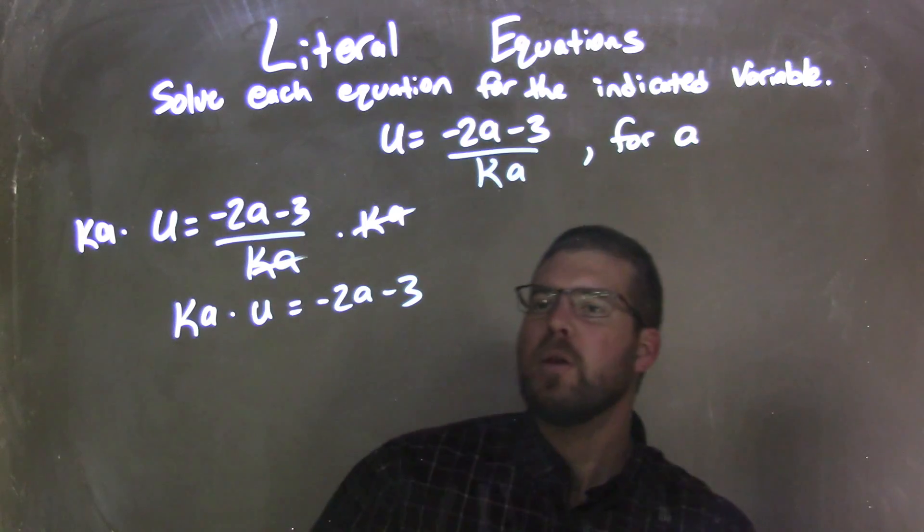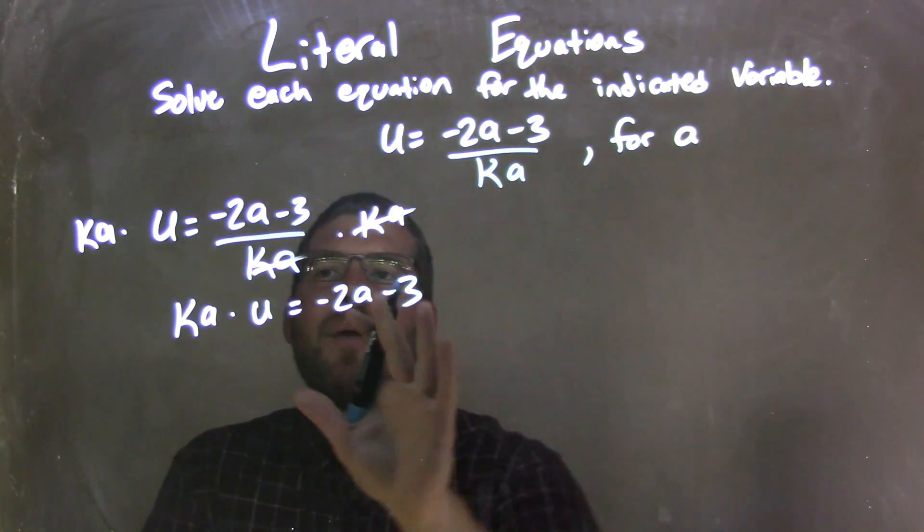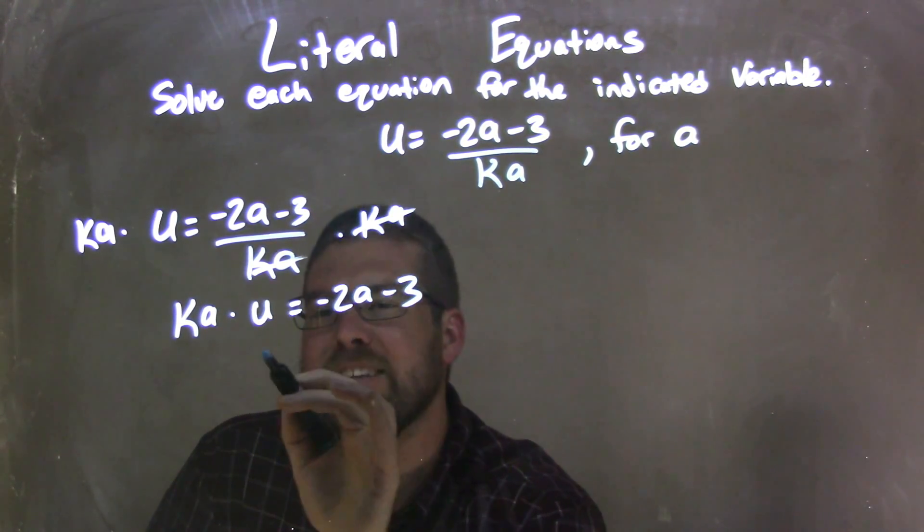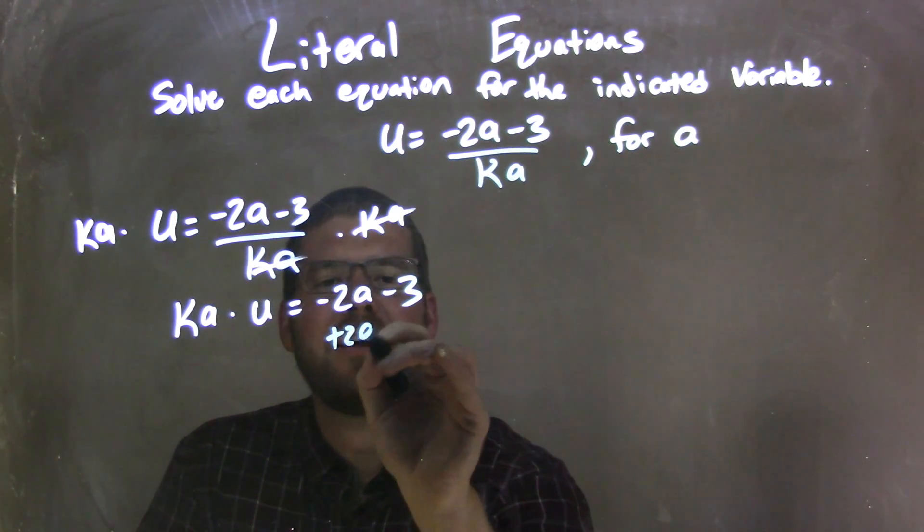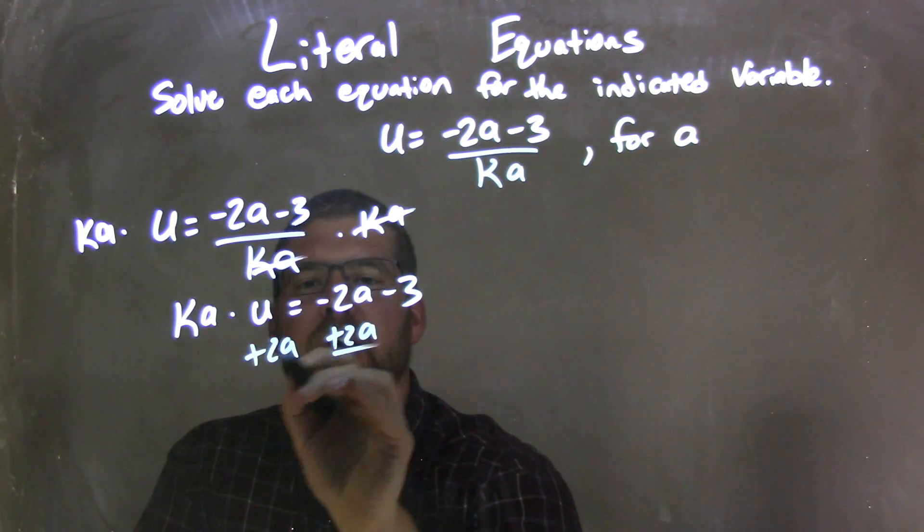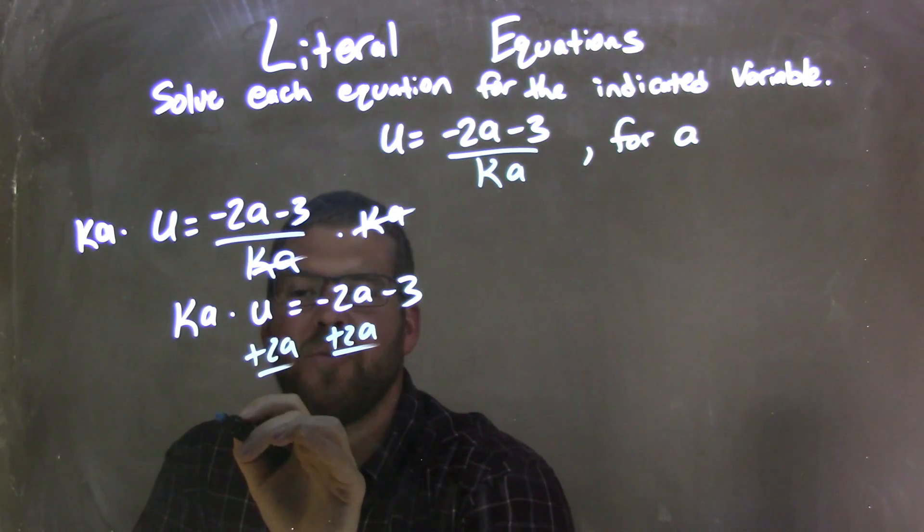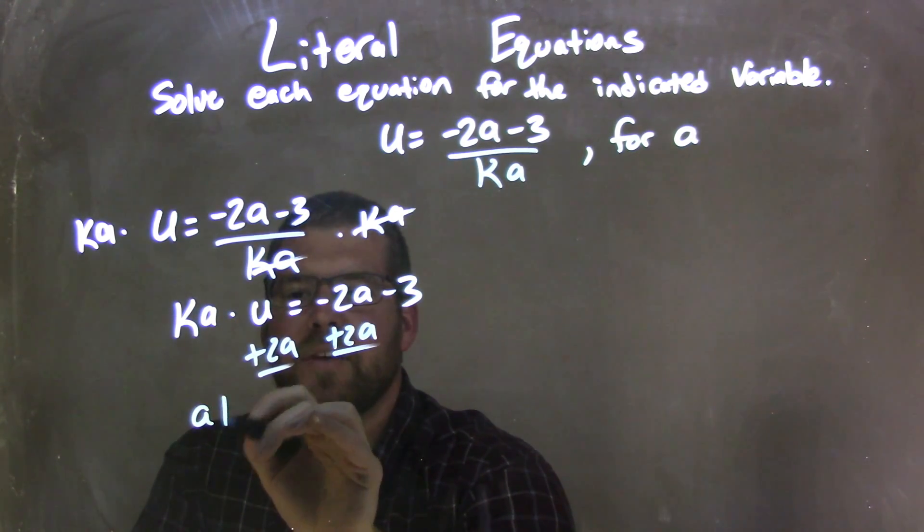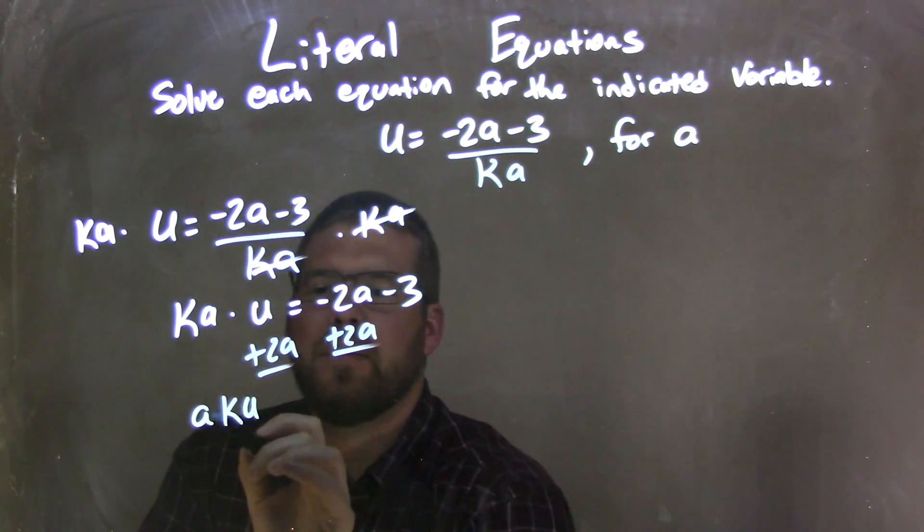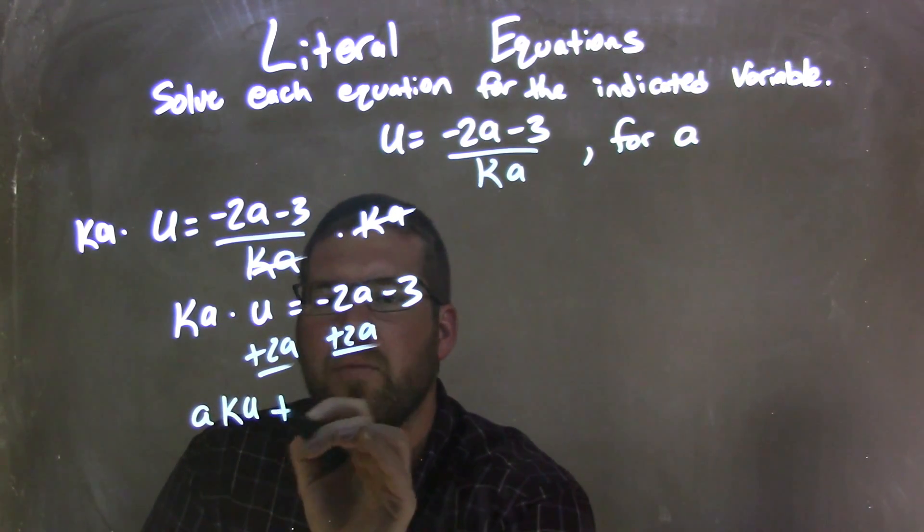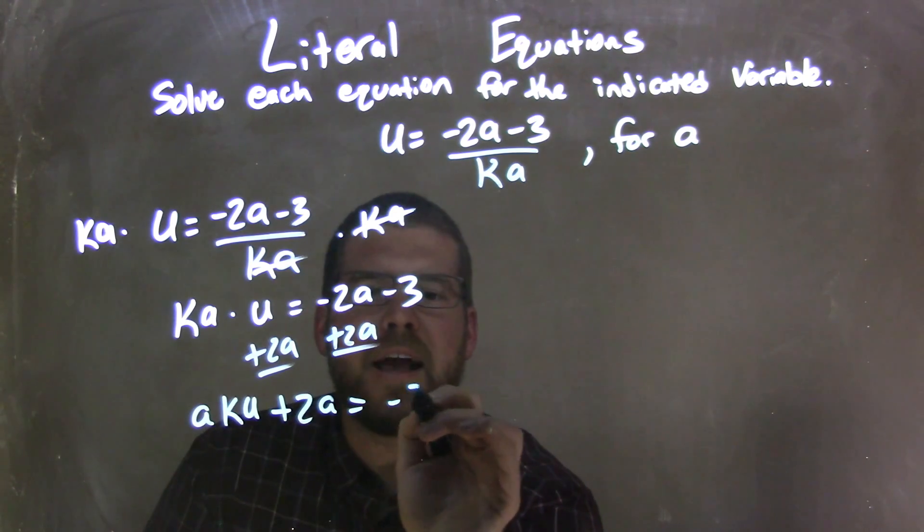Now I'm going to bring my a's together. So I'm going to add 2a to both sides. By adding 2a to both sides, remember that multiplication here. I can write this, let's rearrange that, as a times ku. ka u is the same as a ku, plus 2a, and that's equal to negative 3.